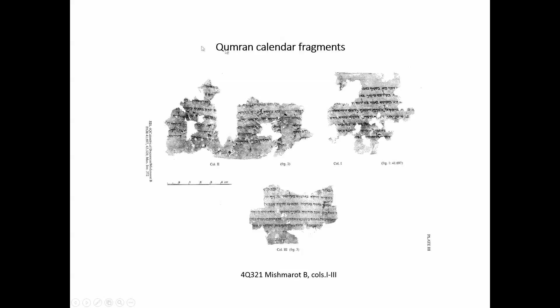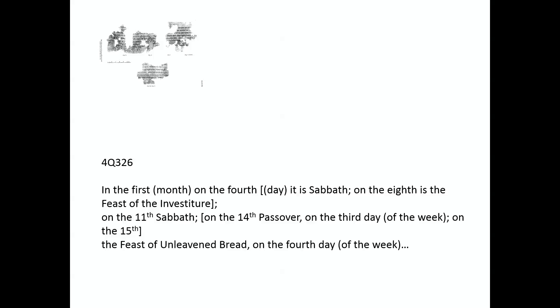In the actual scrolls themselves, what we find is very different. It is not at all a table — it is actually prose, text in prose, written in a continuous manner. For example: in the first month of the fourth day, it is a Sabbath; on the eighth, it is a feast of investiture; on the 11th, Sabbath; on the 14th, Passover, third day of the week; on the 15th, Feast of Unleavened Bread, and so on. It is a continuous text in prose which is actually very difficult to grasp. You don't really get, by looking at the text, the immediate sense of what the calendar is, in the same way as you would when you look at a Roman calendar. The visual simplicity of the calendar is completely lost.